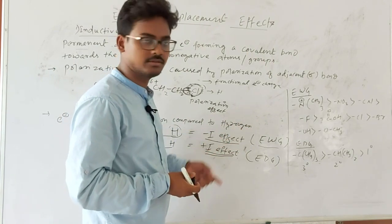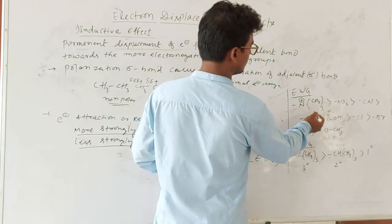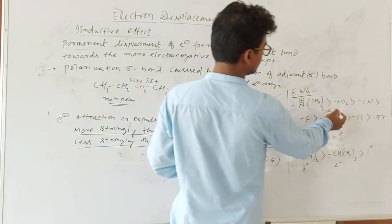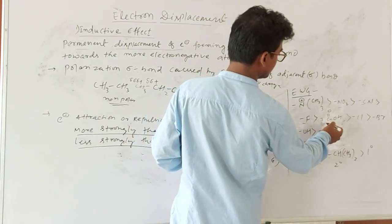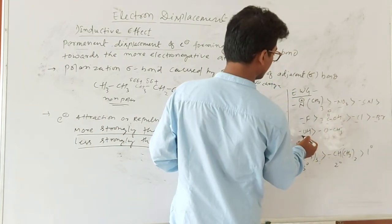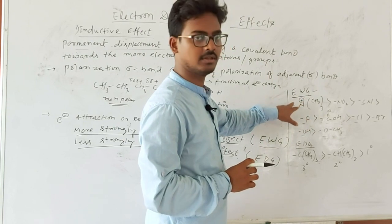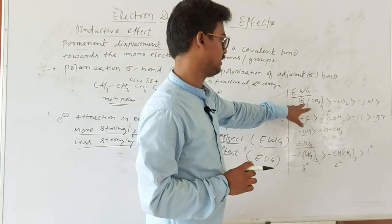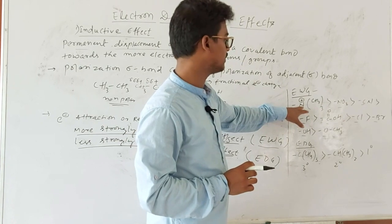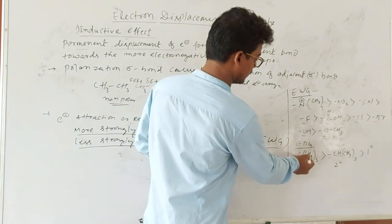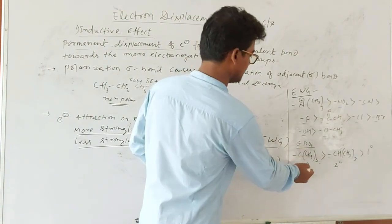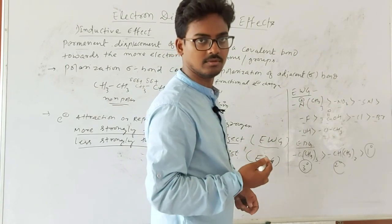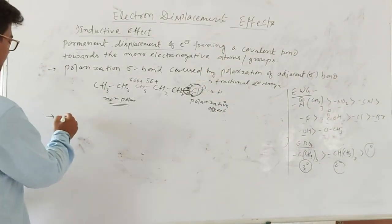Examples of electron-withdrawing groups (–I effect) in order of decreasing tendency: ammonium cation (NH₃⁺) > NO₂ > CN > F > COOH > Cl > Br > OH. For electron-donating groups (+I effect), alkyl groups are the main example — tertiary alkyl > secondary alkyl > primary alkyl in terms of electron-donating tendency.